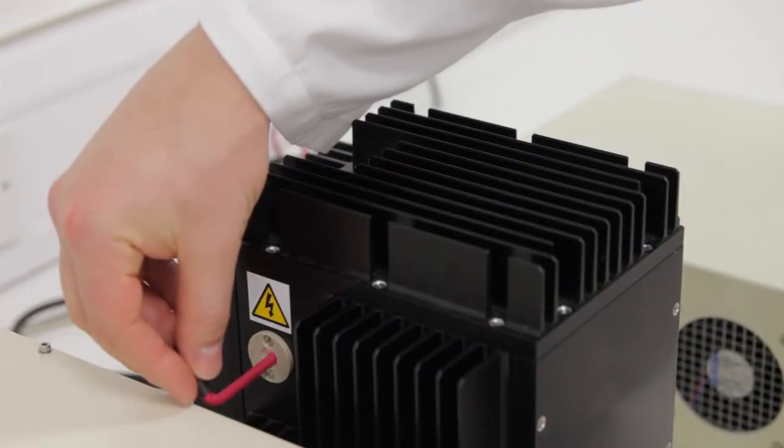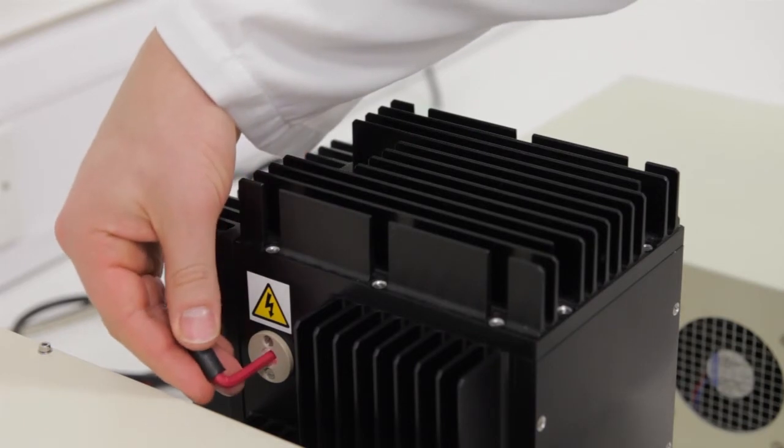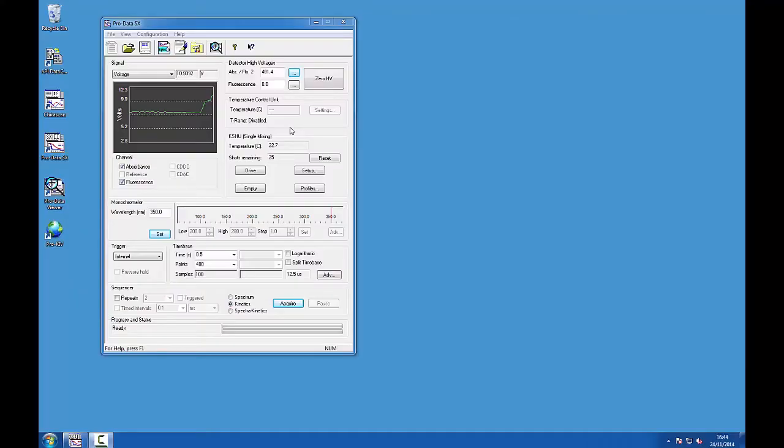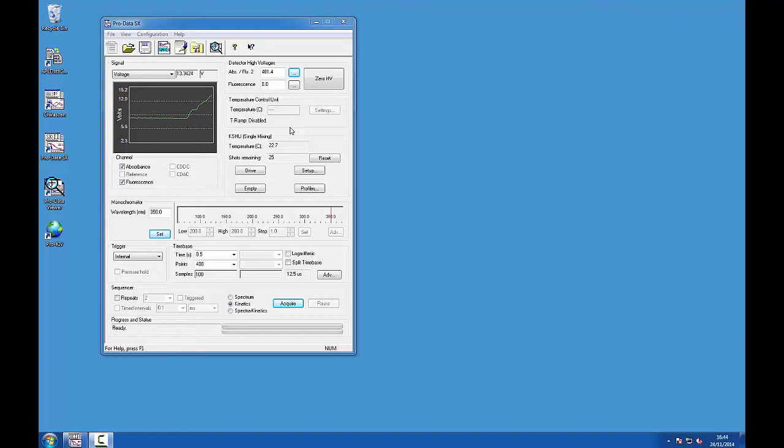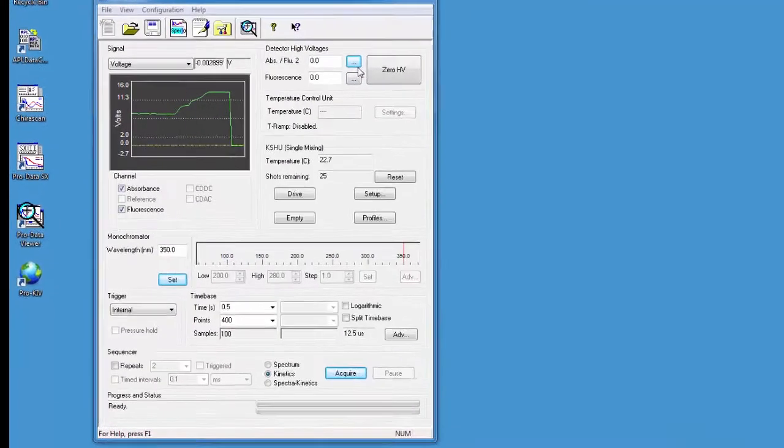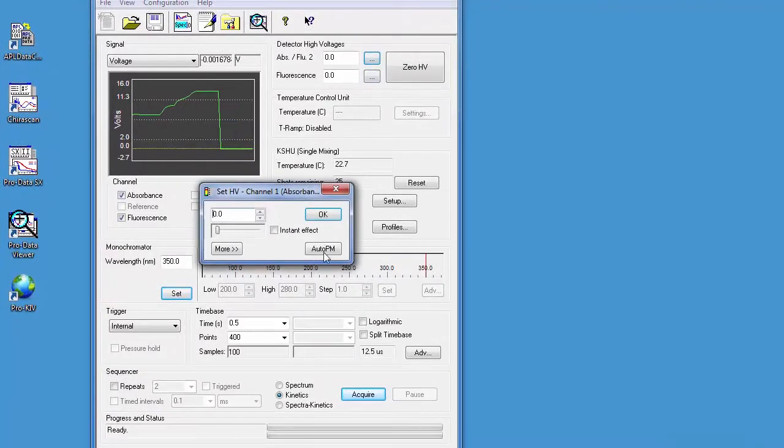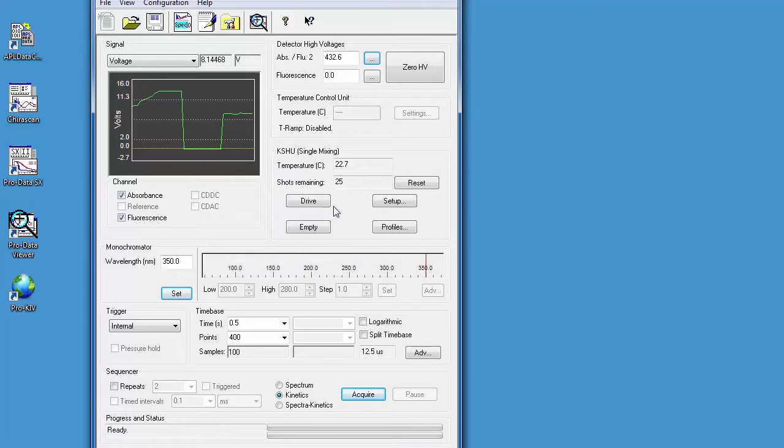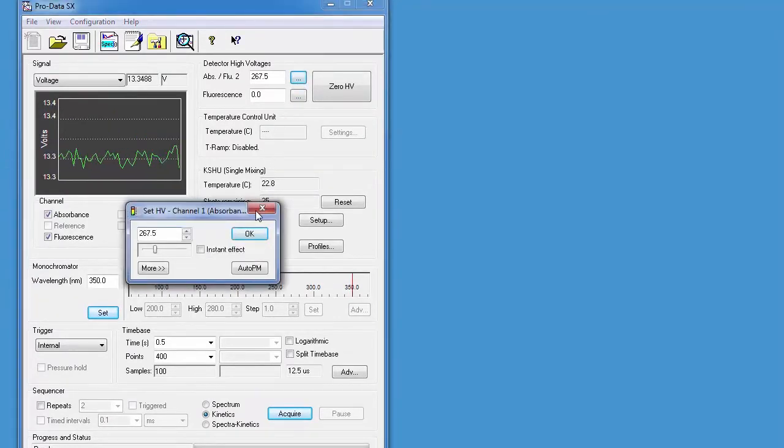If the signal voltage happens to decrease, turn the key in the opposite direction. To keep the signal voltage on scale, you will most likely need to auto PM the detector occasionally. A lower high voltage indicates better light throughput and hence better lamp alignment. When you cannot increase the signal voltage any further, alignment is complete.